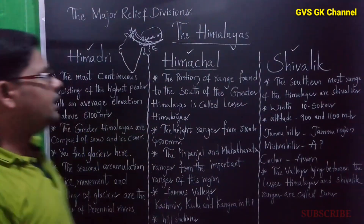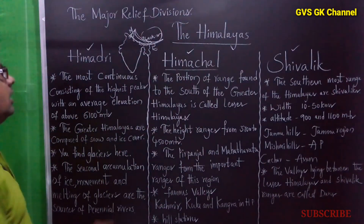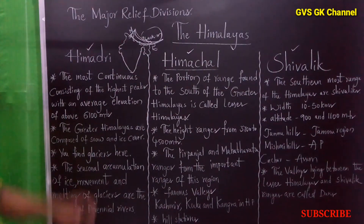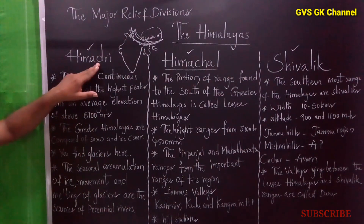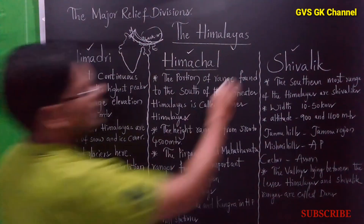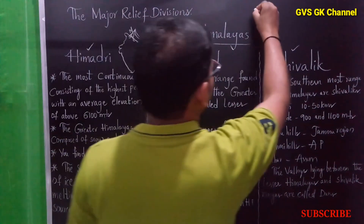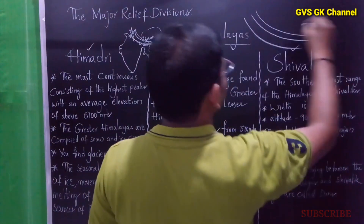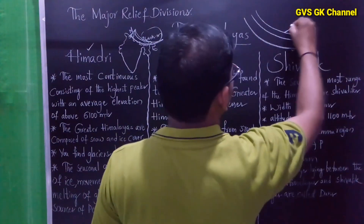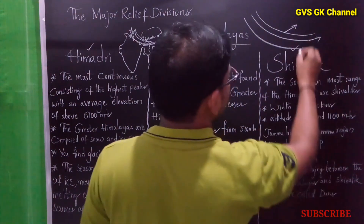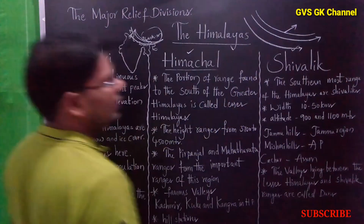Now we are going to discuss each one. The Himadri is also called the Greater Himalayas, and it is the northernmost range of the Himalayas. You can see here the 3 ranges from Jammu and Kashmir to Arunachal Pradesh: the Himadri range, then the Himachal range, and then the Shivalik range.